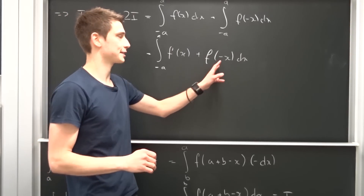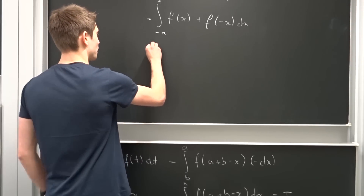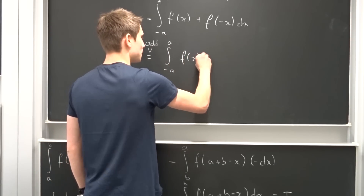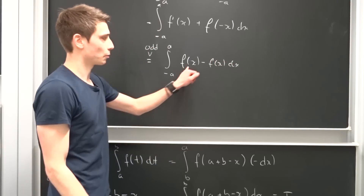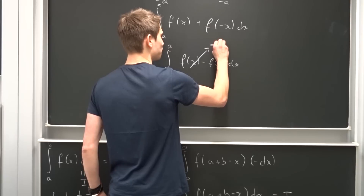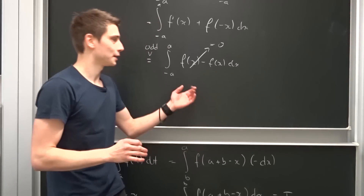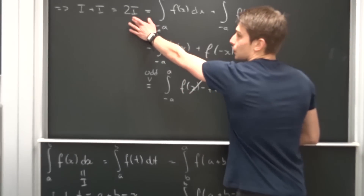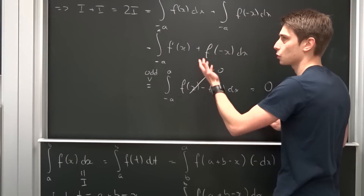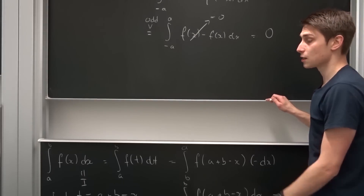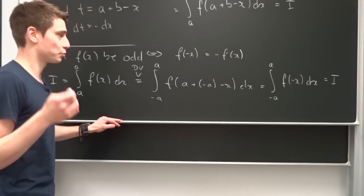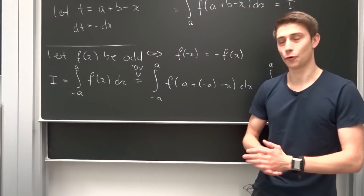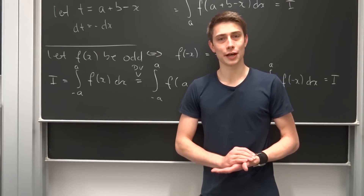Now we use the fact that f is odd: f of minus x equals minus f of x. So we end up with the integral from minus a to a of f of x minus f of x dx. And f of x minus f of x is just 0, so the integral equals 0. That means 2i equals 0, and dividing both sides by 2 gives i equals 0. This holds for all odd functions — over a symmetric interval, any odd function integrates to zero.